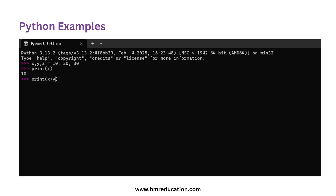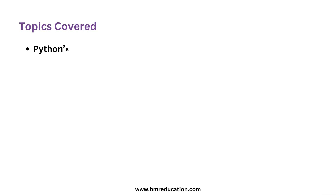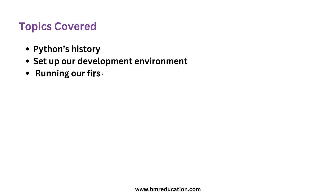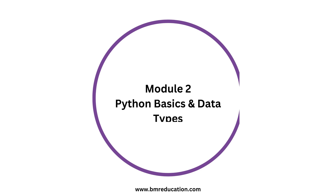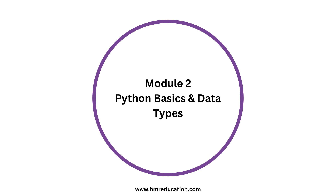Now that you've written your first program, you're one step closer to becoming a proficient Python developer. That wraps up Module 1. Today we learned about Python's history, set up our development environment, and even ran our first script. In the next module, we'll dive deeper into Python syntax and start building more complex programs.